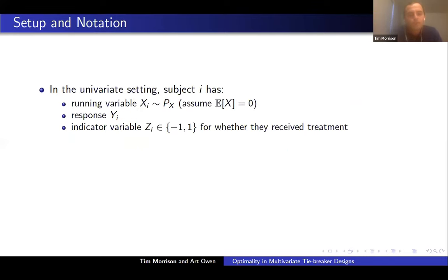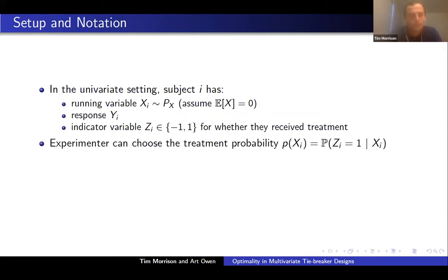Now let's set up some notation, starting with the univariate setting. Subject i has some running variable, a real value x sub i, from some distribution p sub x. Without loss of generality, we take p sub x to have mean zero. They have some response or outcome variable y sub i, and an indicator variable z sub i — plus or minus one — for whether they receive treatment or not. As the experimenter, we can't do anything about p sub x, but we can choose the treatment probability p of x — the probability that z sub i equals one conditional on covariates, i.e., the propensity score.